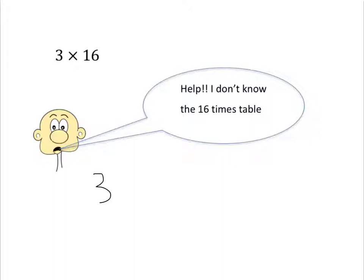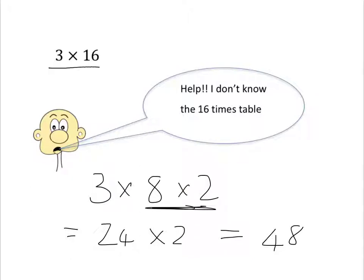Did you do this? 3 multiplied by 8 multiplied by 2 because 8 times 2 is just 16. So 3 times 8, you know well, that is 24. And 24 times 2 is equal to 48. So 3 times 16 gets us to 48.